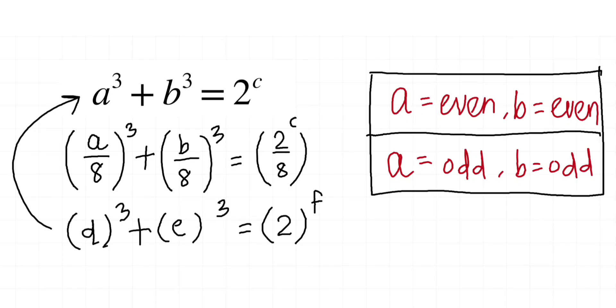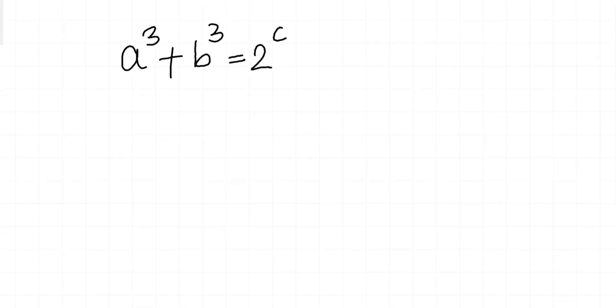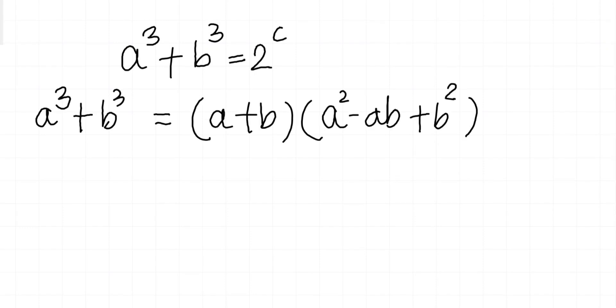Assume that both A and B are odd. Then we can factorize A³ plus B³, and if you see here, this is equal to the power sum formula. So definitely because A and B both are odd numbers, this quantity is even and this quantity is odd.